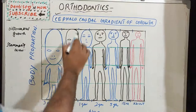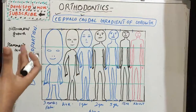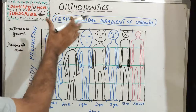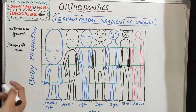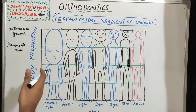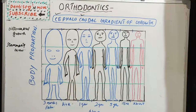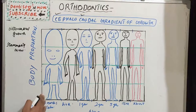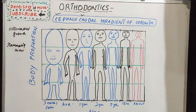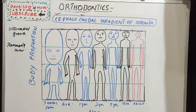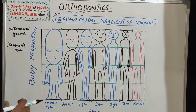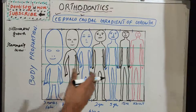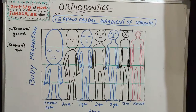In the cephalocaudal gradient, 'cephalic' refers to the head and 'caudal' refers to the lower portion. This describes how the head and the remaining portions are proportioned relative to each other during various stages of growth — from the fetus to the adult. There are differences in the relative rates of growth between parts of the body, and overall body proportions change as one grows from fetal life to adulthood.